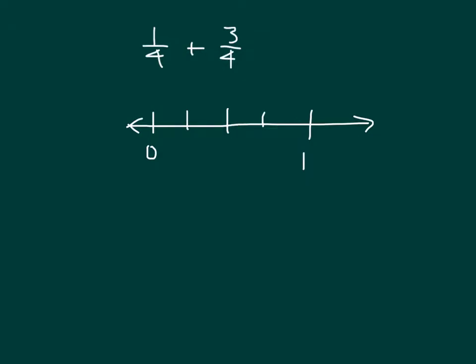Labeling that: this first one is 1 fourth, this is 2 fourths, this is 3 fourths. We'll start at 0 to model. We have 1 fourth, so we go to 1 fourth. But we're still adding 3 fourths. Going here would only be 1 fourth more, going there would only be 2 fourths more. We have to go 1, 2, and 3 fourths more.